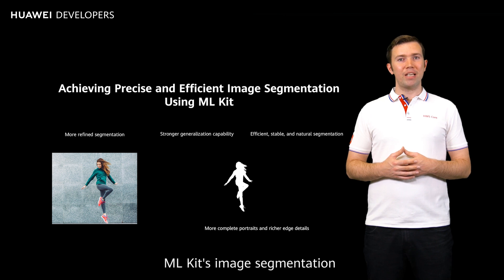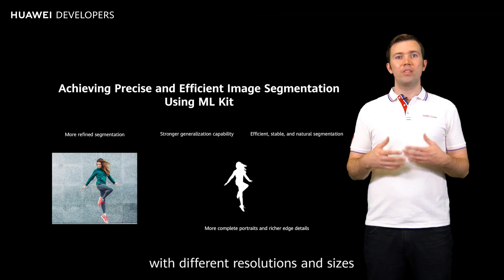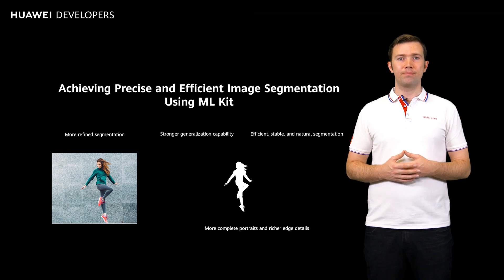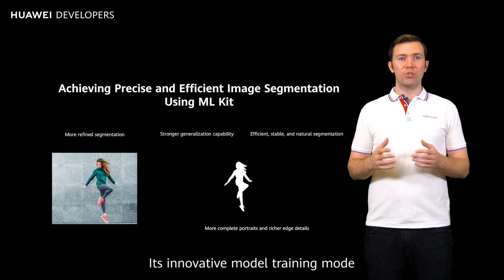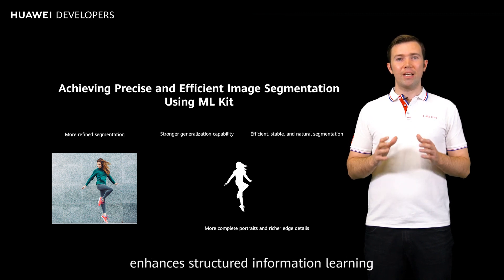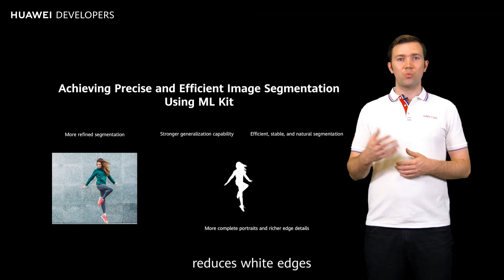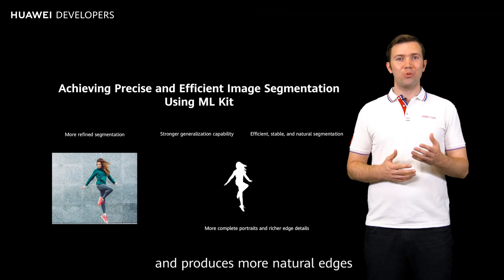ML Kit's image segmentation improves the capability of processing images with different resolutions and sizes. Its innovative model training mode enhances structured information learning, reduces white edges, and produces more natural edges.